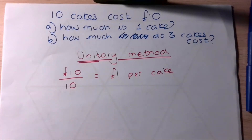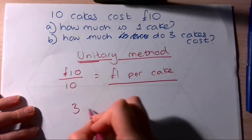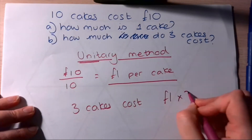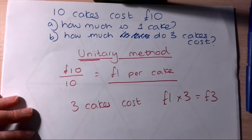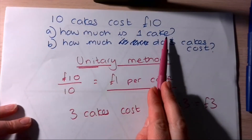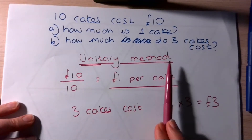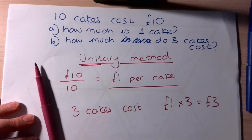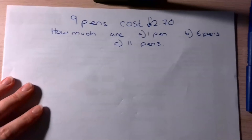We've answered part A: one pound per cake. Then for three cakes, once we know what one cake costs, we do one pound times three — so three cakes cost three pounds. You won't always be prompted to find the cost of one first, but that's the key thing you need to do — find the cost of one even if you haven't been told to.